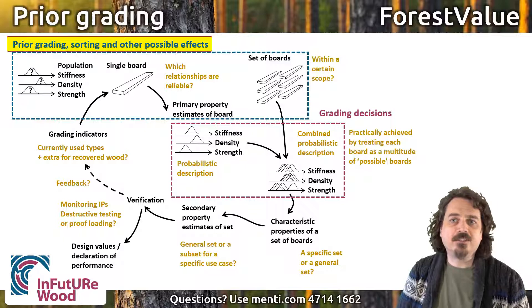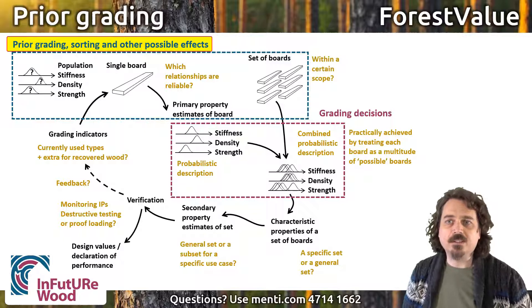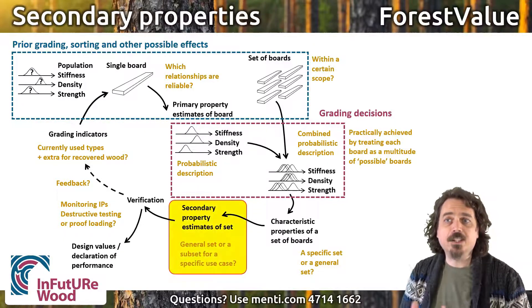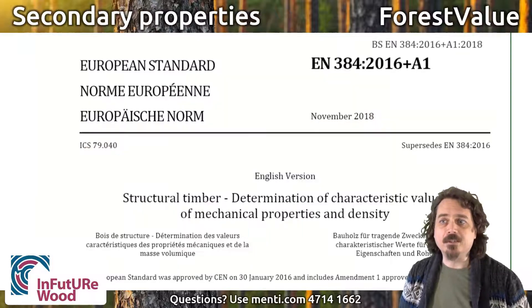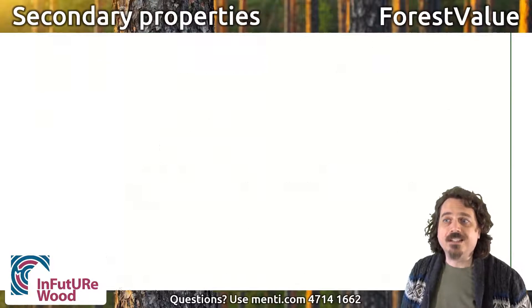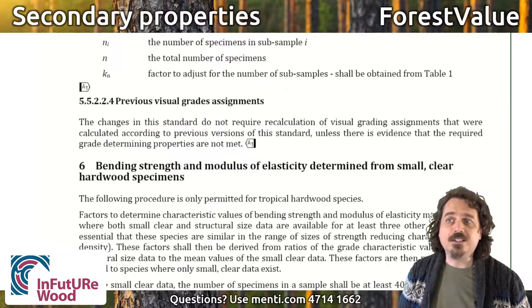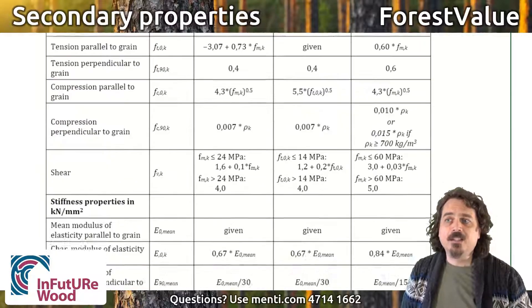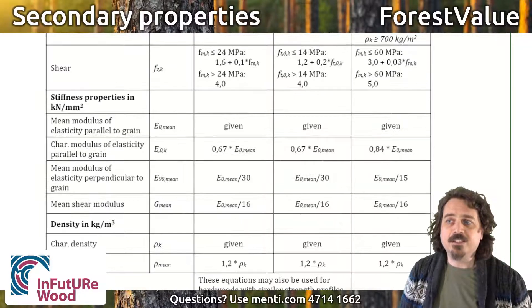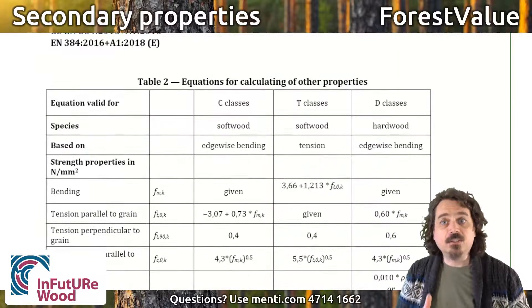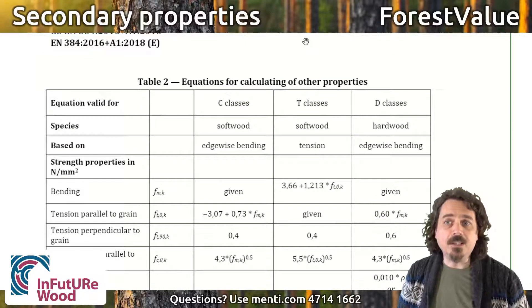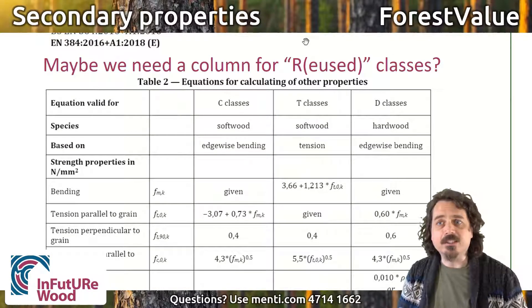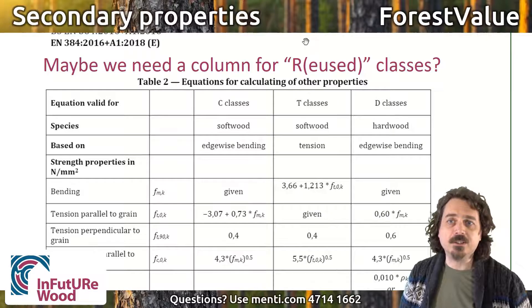But that's not everything that we need to consider. There are, perhaps, degradation processes that affect secondary properties that make recovered wood different to new timber — tension strength and increased tendency to split, for example. That's something investigated in Work Package 4, and as far as the grading method goes, more research might mean that we need a different set of secondary properties equations.